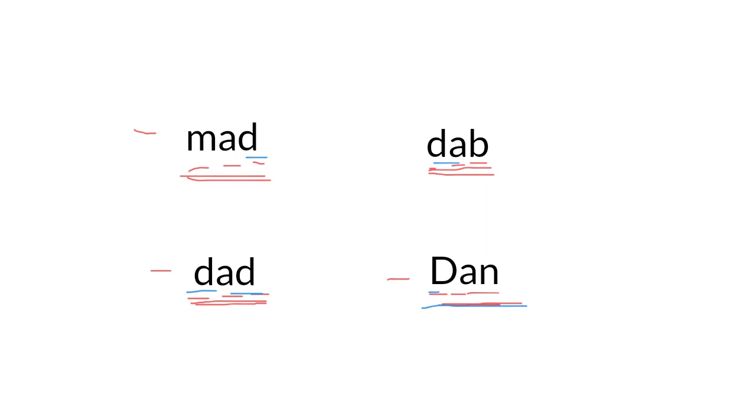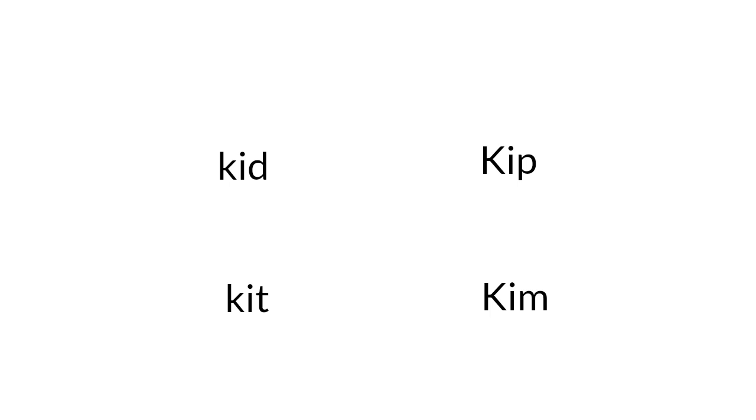Well done everybody. Now let's read these words together. As you can see, all these words have the letter K at the beginning. They also have the short I sound in the middle. So let's read them together, starting with this one: K-I-D — kid.